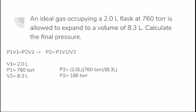So with the information given, V1 is equal to 2.0 liters, P1 is equal to 760 torr, and V2 is equal to 8.3 liters. And to solve for P2, you could just plug it into the equation. So you would multiply 2.0 liters by 760 torr, and divide all of that by 8.3 liters to get 180 torr.